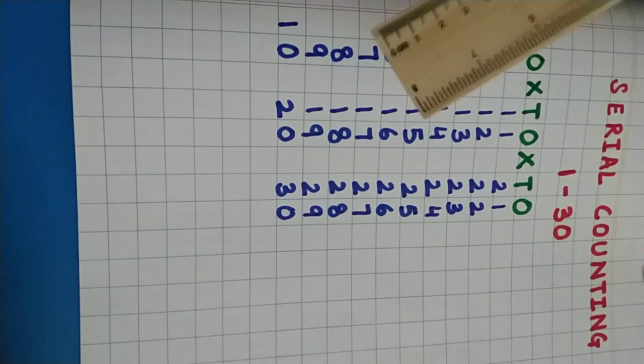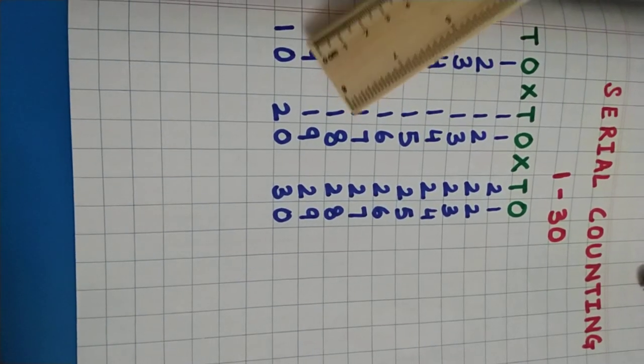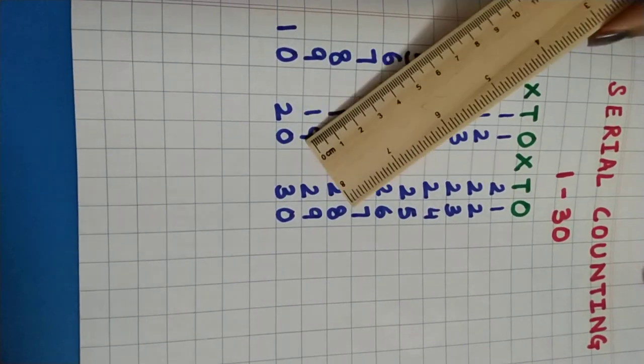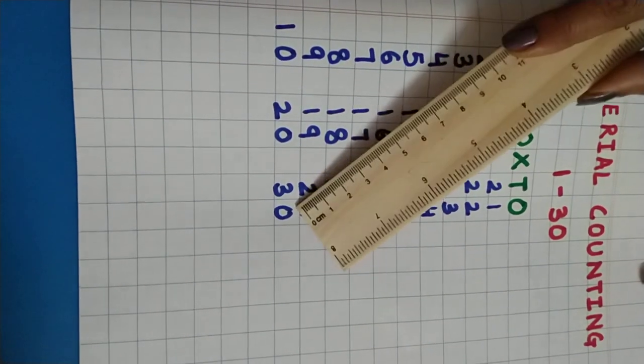3 tens, 30. So this means 1 ten, 10. 2 tens, 20. 3 tens, 30.